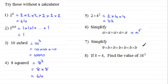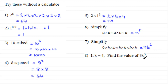Number seven: simplify nine times b times b times b times b times b times b. The b is repeated six times, so it's nine multiplied by b to the power six — or dropping the multiplication sign, nine b to the power six.